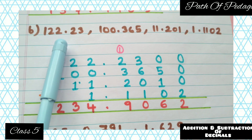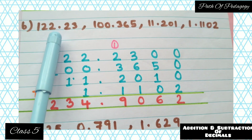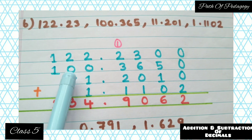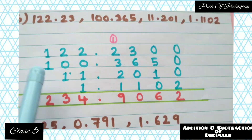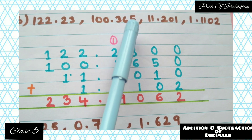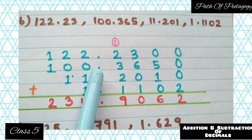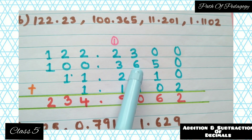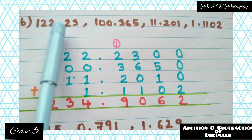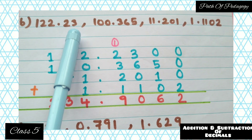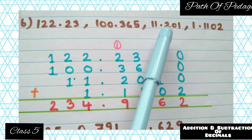For question b, you have to arrange the decimals. First: 122.23 — write it down. Then 100.365 — write it down. Now after the decimal point, 100.365 has three digits and 122.23 has two digits, so you have to add one zero to 122.23 to the extreme right. Next: 11.201 — write it down.